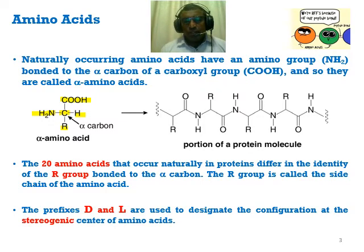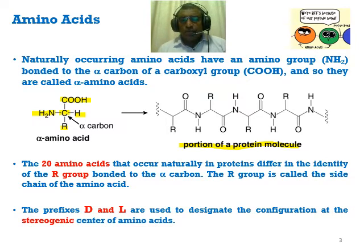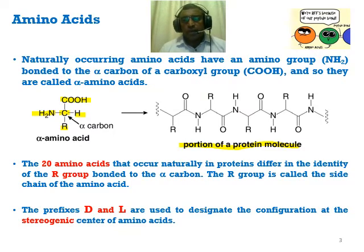Two or three amino acids coming together — and further on — form something known as a polypeptide. What keeps them together is the peptide bond, also called the amide bond. This peptide bond is formed because of the loss of a water molecule, also referred to as the process of condensation.